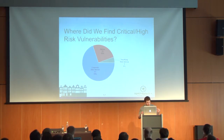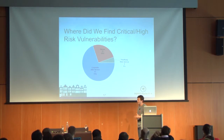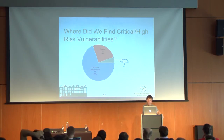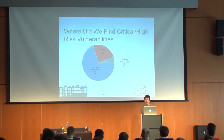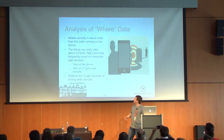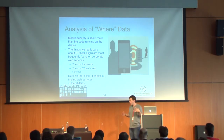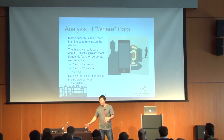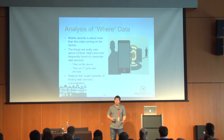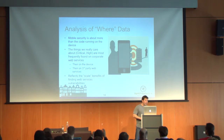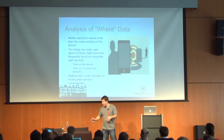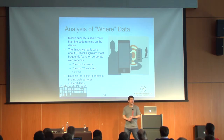If we drill in and look at only the critical and high vulnerabilities, it shifts around a little bit. We see 25% of the vulnerabilities identified on the device, 70% identified in the corporate web services, and 5% in the third-party web services. So what this basically says is: if your mobile application security program solely consists of testing the device itself, you're going to miss two-thirds of the potential serious vulnerabilities that are out there. This was confirmed by our data — we're finding stuff on the server side more frequently and it is potentially very serious.